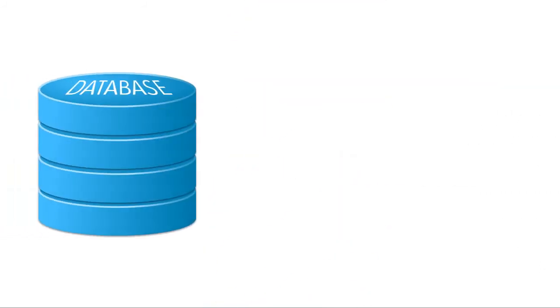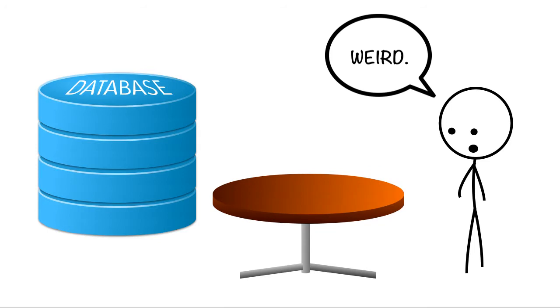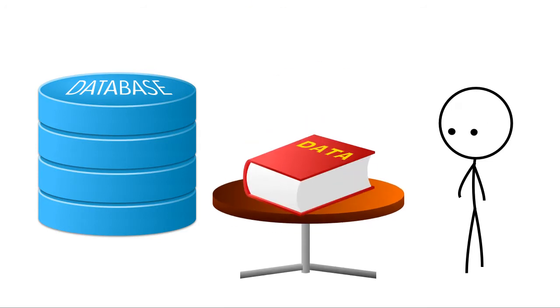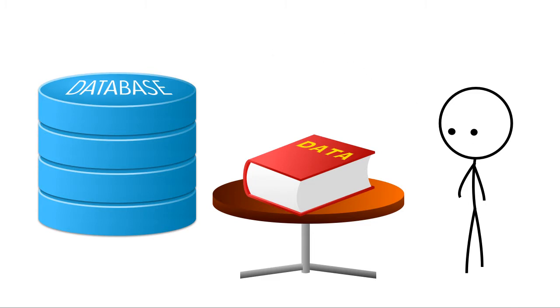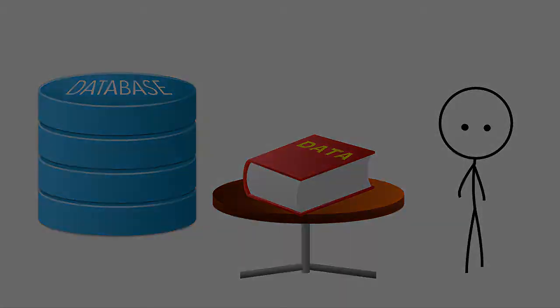It organizes its data using tables. What's a table? A table stores data about a single topic into rows and columns. Does this structure sound a bit like a spreadsheet? Let me use that as an example.